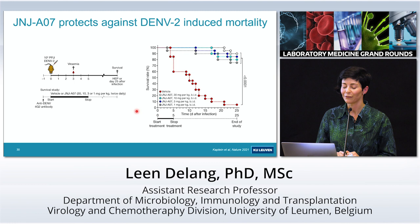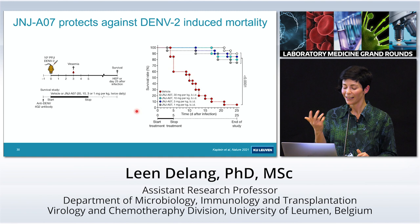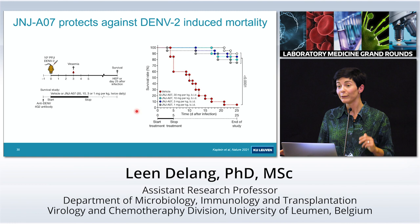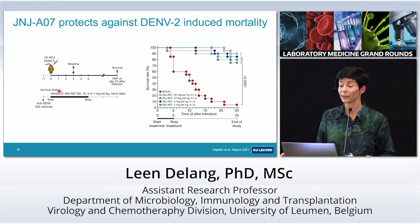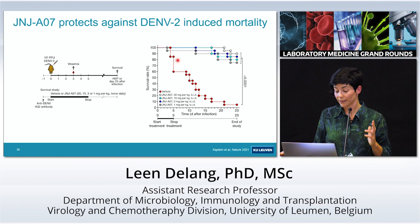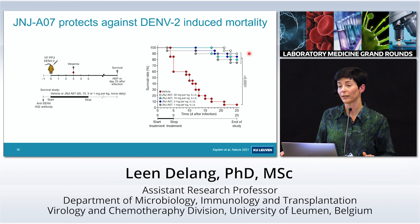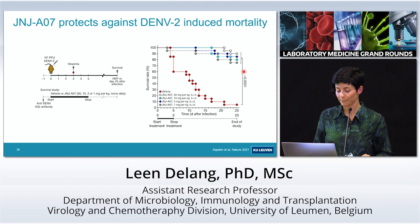We also wanted to know if this molecule worked as an antiviral drug in vivo. For dengue, we use a mouse model with AG129 immunodeficient mice that support efficient dengue virus replication. We infected the mice, started treatment at the time of infection with several doses. In the vehicle group, mice had to be euthanized from day five, with almost all euthanized by end of study. With higher concentrations of treatment, it was very efficient in preventing the virus from making mice sick — a very potent result.